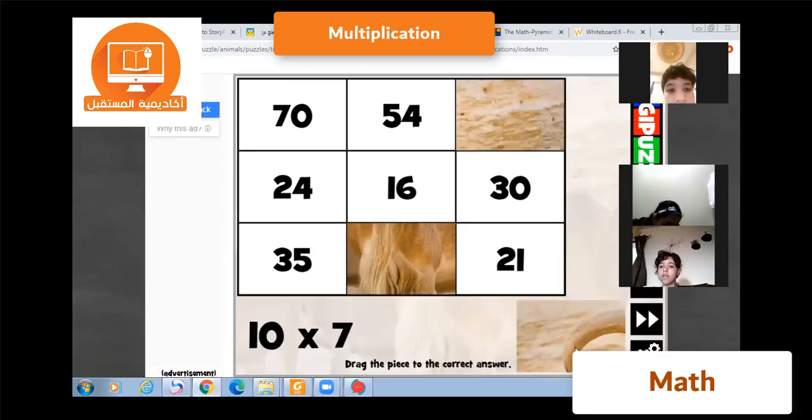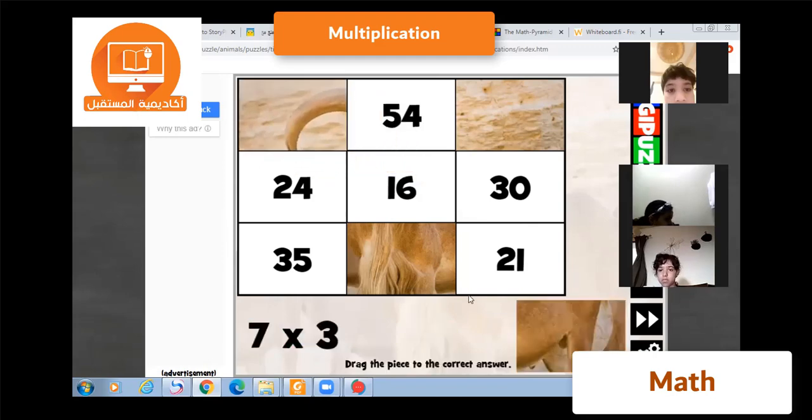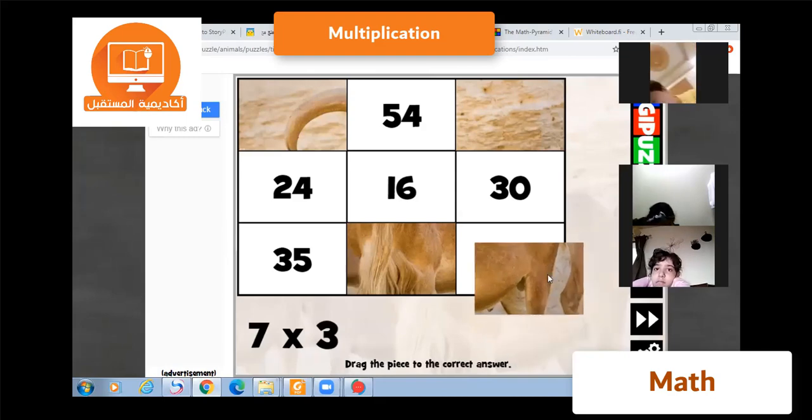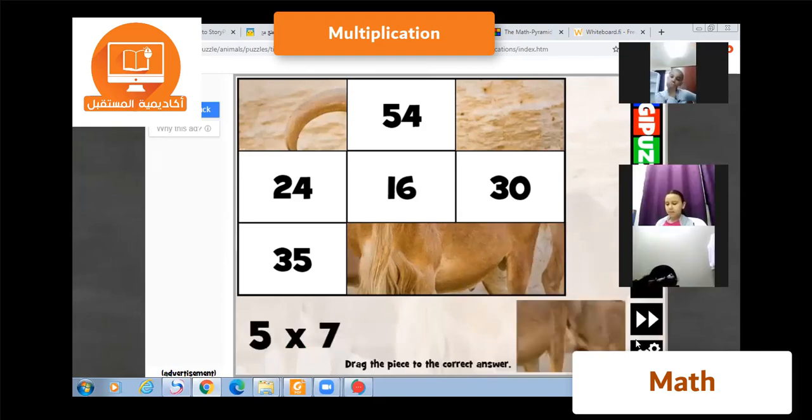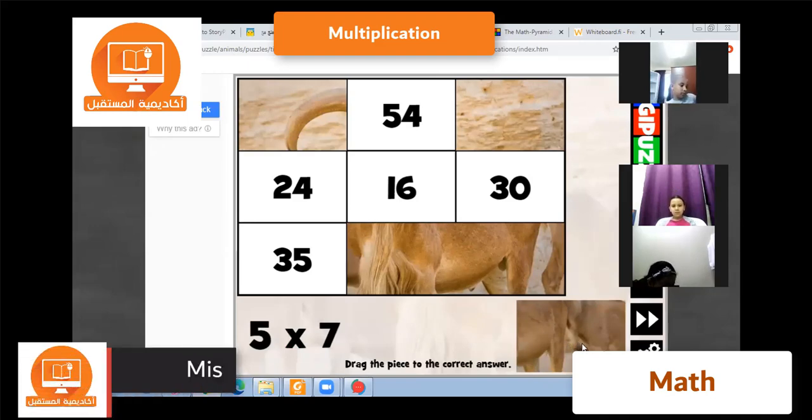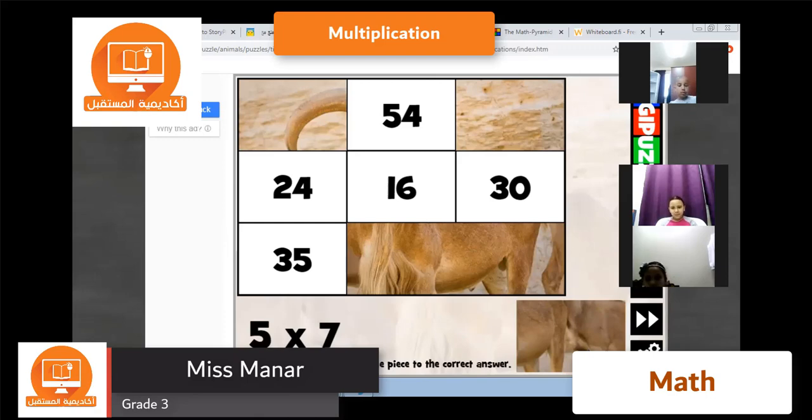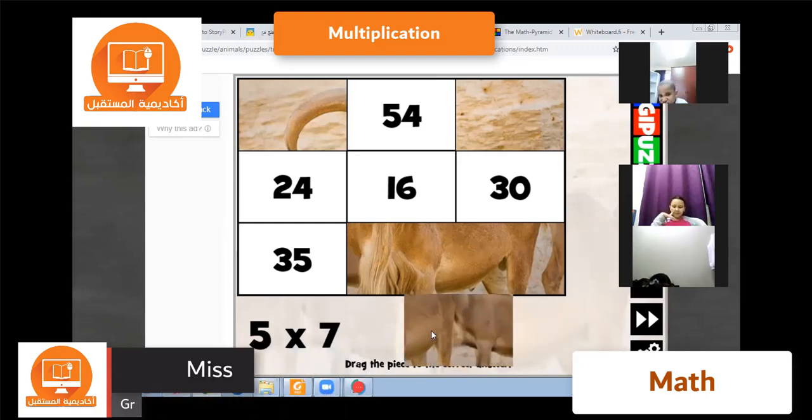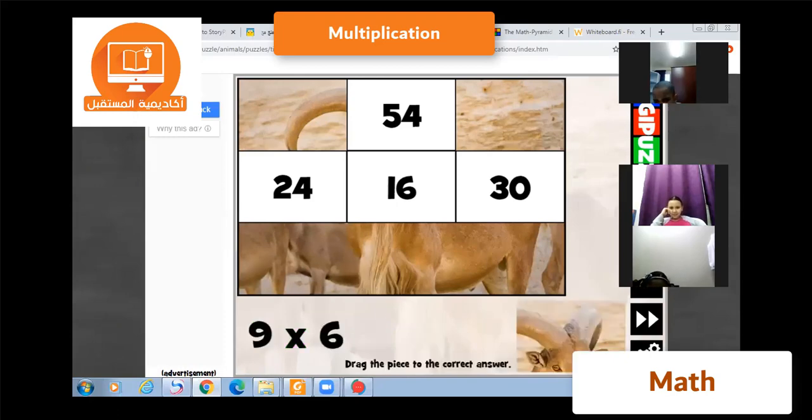Ten times seven equals seventy. عمر محسن, عمر محسن, seven times three equals... Seven times three equals twenty-one. Bravo! عمر مصطفى, عمر محسن, nine times six equals...